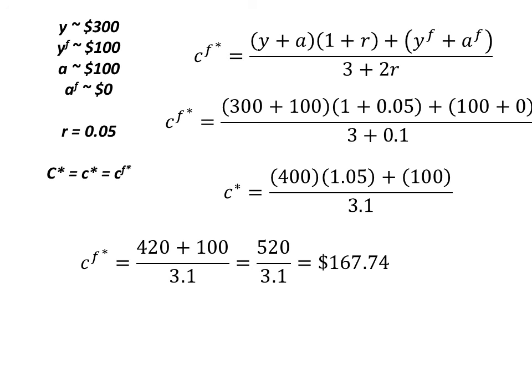So our future consumption is going to be $167.74. Now we know that current consumption is twice as much as future consumption, so our current consumption is going to be 2 times $167.74, which means current consumption is going to be $335.48.